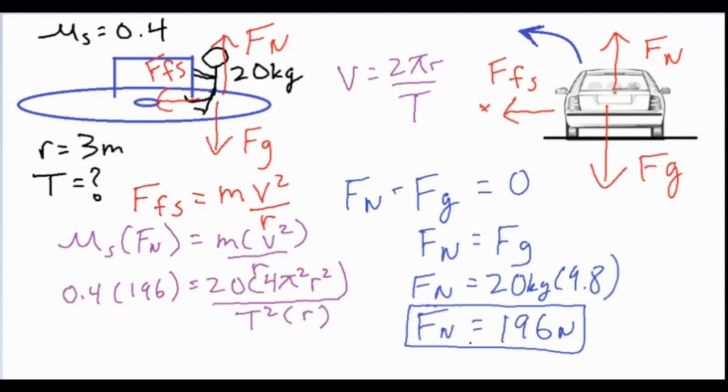And then we still have this original r that's in the m v squared over r, so we also have another r on the bottom, so we can go ahead and cancel out one of the r's. So what we're going to do is a little bit of cross multiplication. We're going to cross multiply these two and then we're going to get T squared equals...